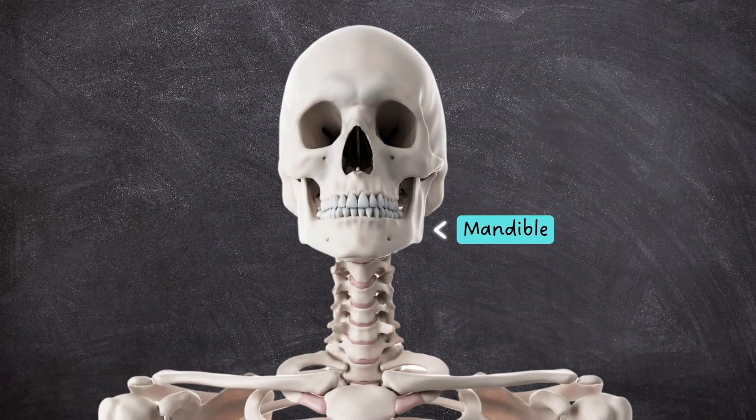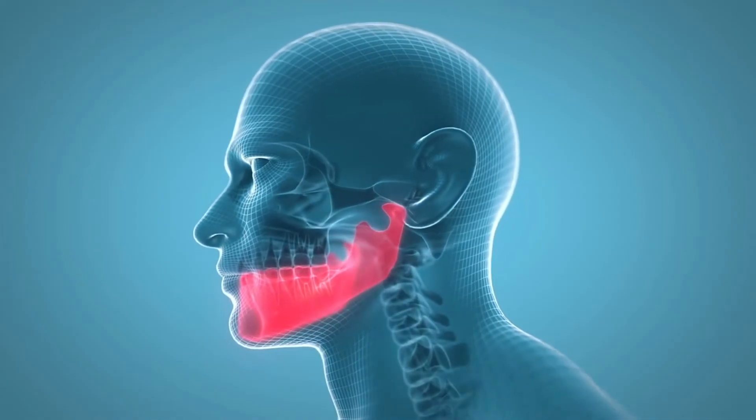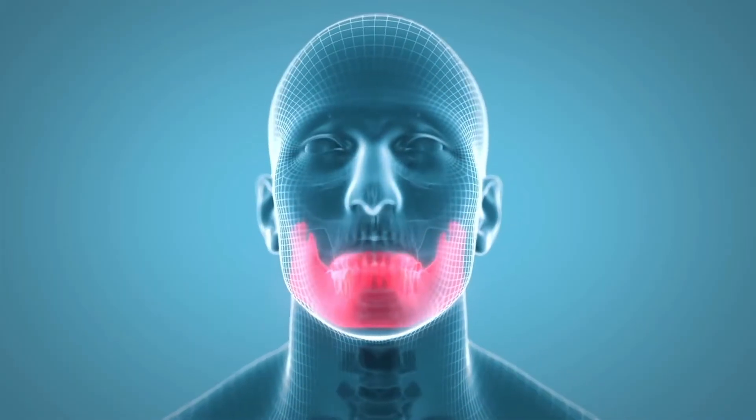The mandible is the largest bone in the human skull and the one bone that can move freely. It holds the lower teeth in place, assists in mastication or chewing, and forms the lower jawline.